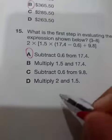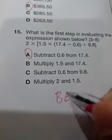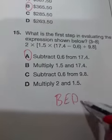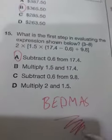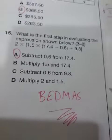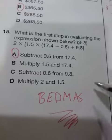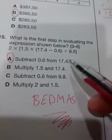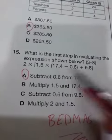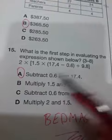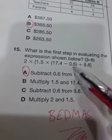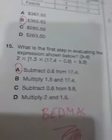Question 15 — what's the rule? I'm going to write it: BEDMAS. Don't forget your BEDMAS rule. We do what's inside the bracket first, and this bracket is inside the bigger bracket. This must be the first step — subtracting 0.6 from 17.4. Job done.